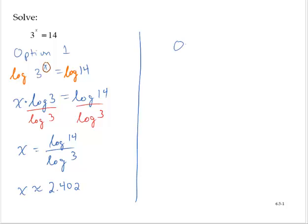Option two has us take the original equation and rewrite it in its logarithmic form. We've learned how to take an exponential equation and rewrite it in a logarithmic form. So doing that, we would write x is equal to the log base 3 of 14.